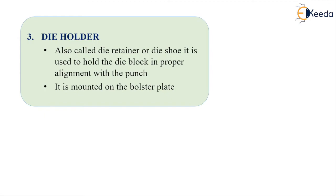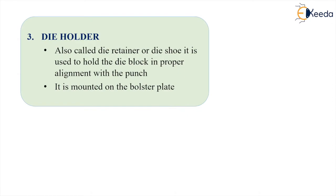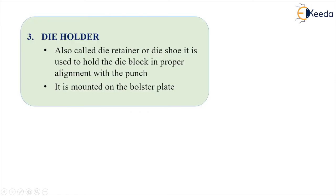The die holder, also known as the die retainer or die shoe, is used to hold the die block. Its main function is to hold the die block in proper alignment with the punch, which is very important since the punch travels inside the die. The die holder is mounted on the bolster plate.